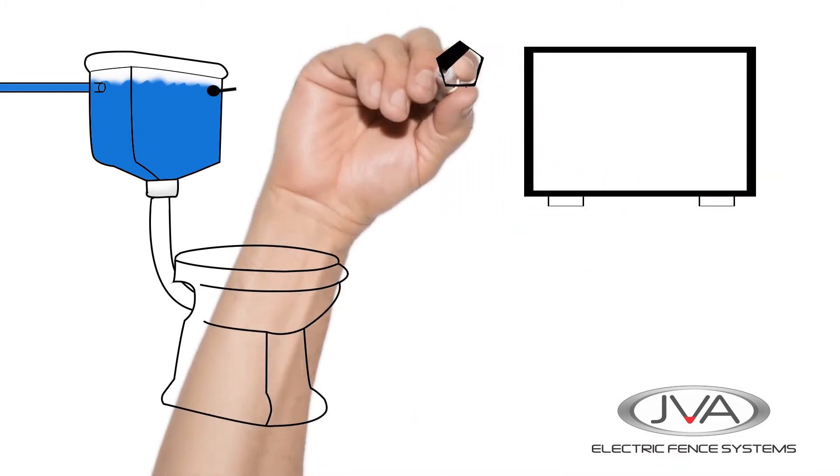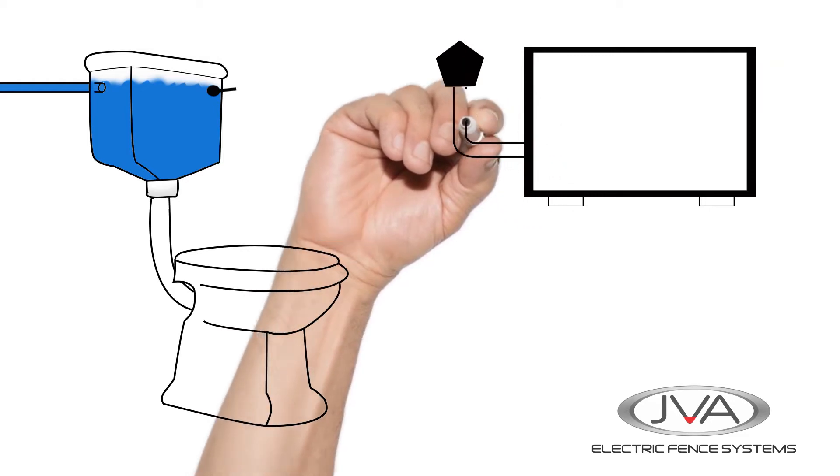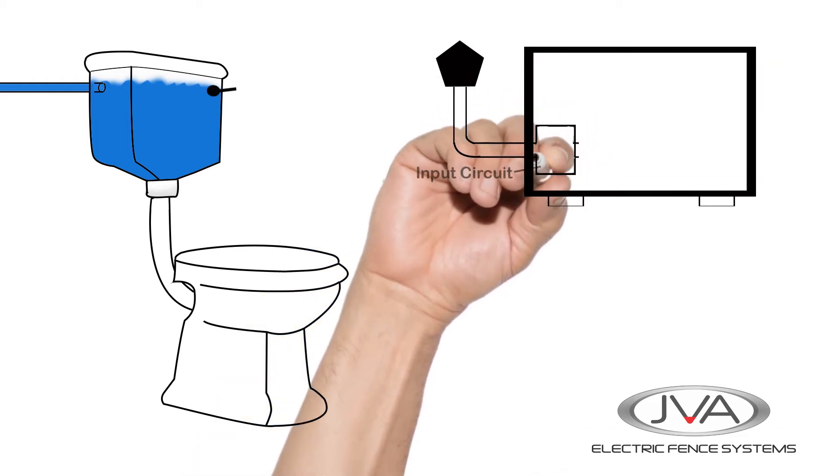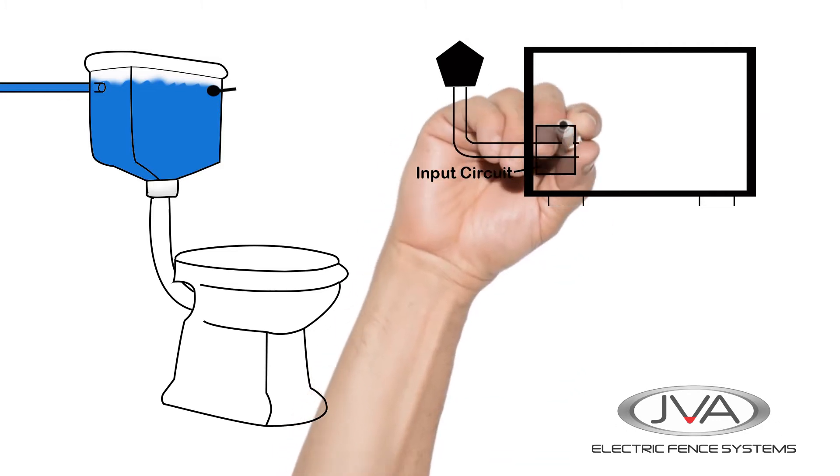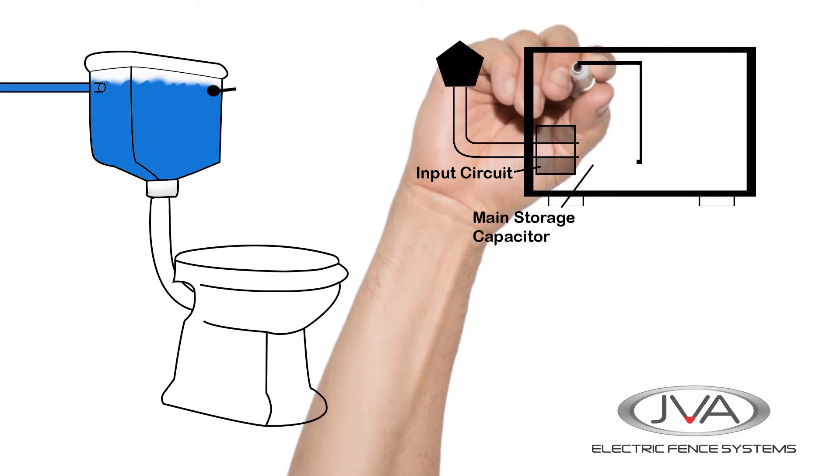In a similar way, an electric fence energizer has a power input from the mains power supply or a 12 volt battery. This power is also used to fill a tank, but in this case it is a capacitor which is a reservoir for electrical energy.